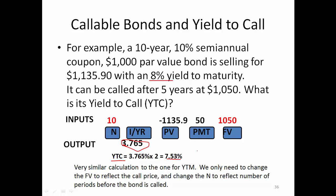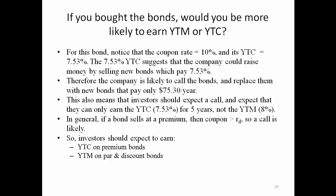If the issuer decides to call back the bond, investors cannot realize the yield to maturity. Instead, they would only realize the yield to call. The 10% coupon rate versus the 7.53% yield to call suggests the company could raise money by selling new bonds paying only 7.53%. Therefore, the company is likely to call the bonds, replacing them with new bonds paying only $75.30 per year, reducing their interest expense. Investors should expect a call and expect to earn only the 7.53% yield to call for five years.